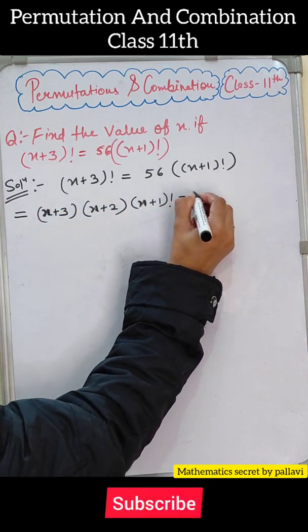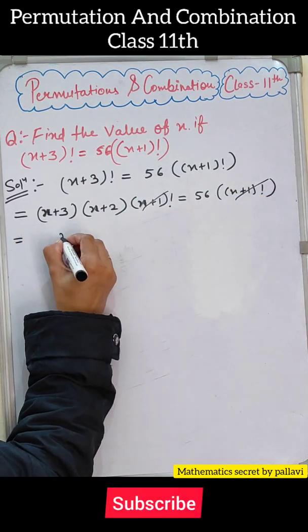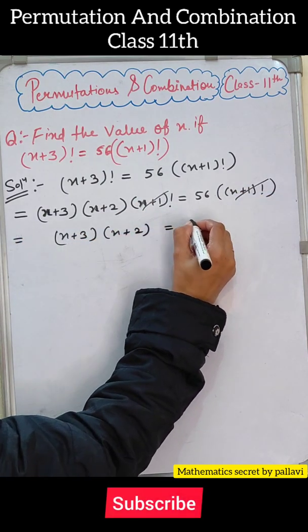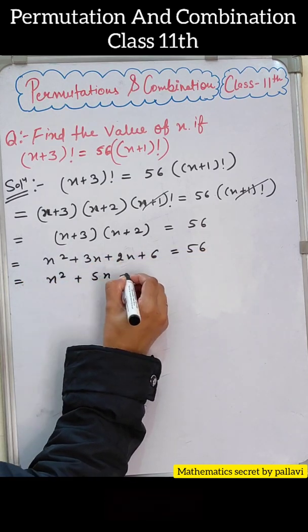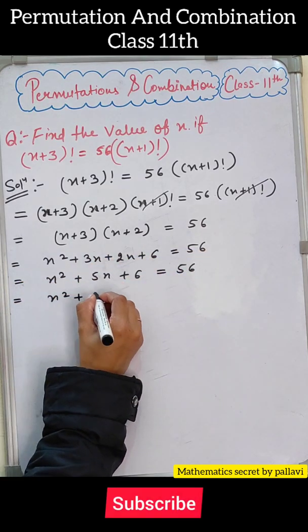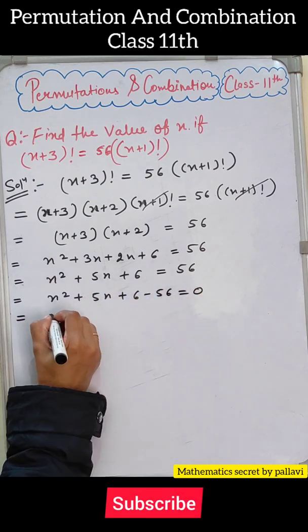First we take (n+3)! = 56(n+1)!. We expand (n+3)! as (n+3)(n+2)(n+1)!, which equals 56(n+1)!.